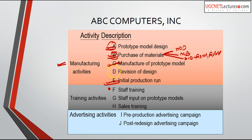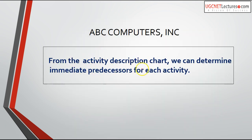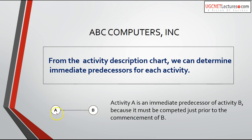After the manufacturing activities come initial production and staff training. Then there are training activities and advertising activities — pre-production advertising and post-redesign advertising. From the activity description chart we can determine the immediate predecessor for each activity. For example, activity B cannot start before activity A is completed — activity A is the immediate predecessor of activity B because it must be completed just prior to the commencement of B. Like this, we generate the activity description chart from the set of activities.